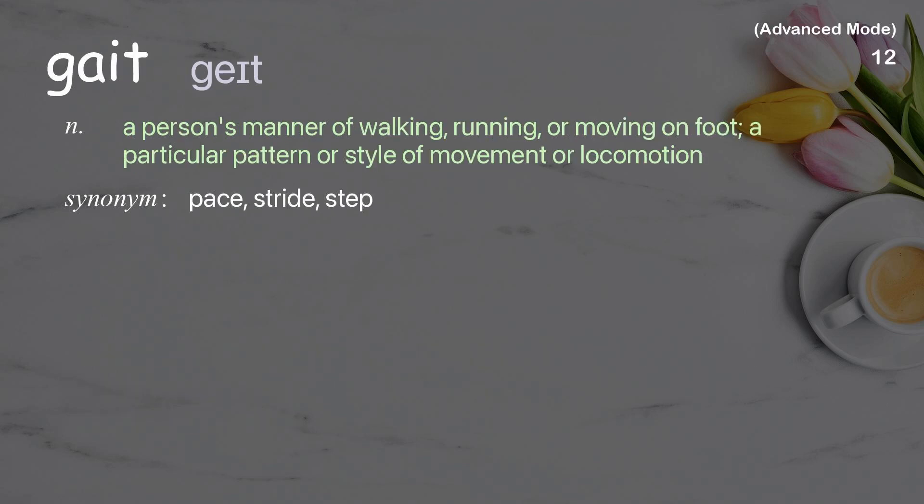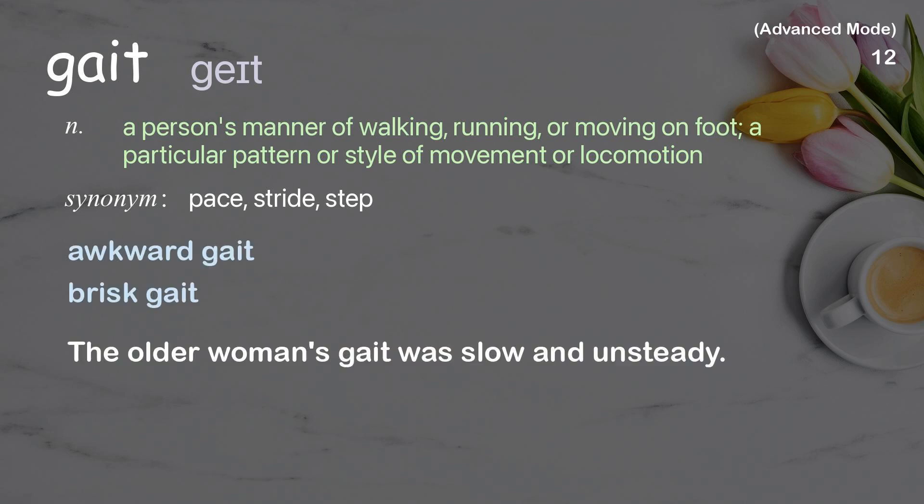Gait: a person's manner of walking, running, or moving on foot; a particular pattern or style of movement or locomotion. Examples: awkward gait, brisk gait. The older woman's gait was slow and unsteady.